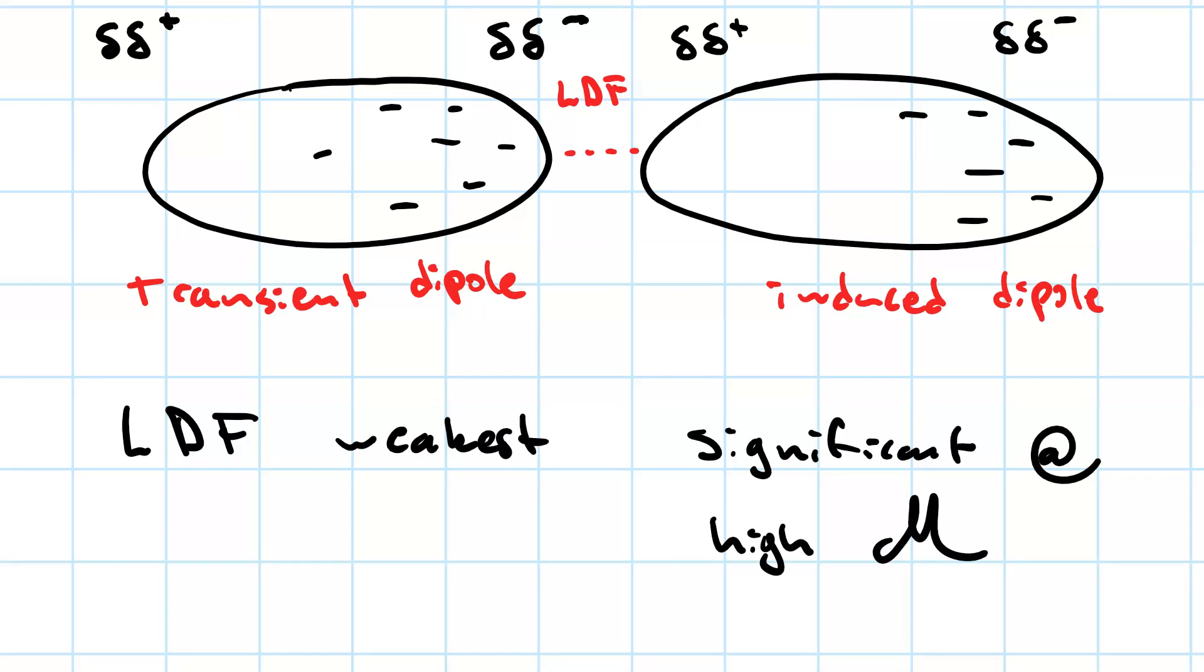Because these small amounts of charge separation are transient, that is, they have very short lifetimes and there is no permanent charge separation, London dispersion force is what we call hydrophobic. That gets to the like-dissolves-like idea.